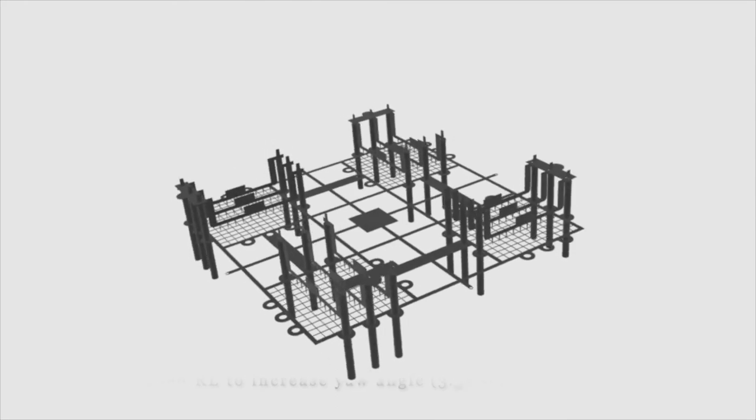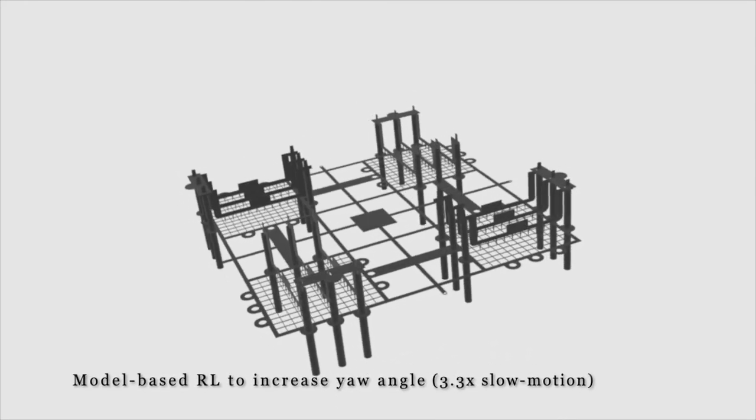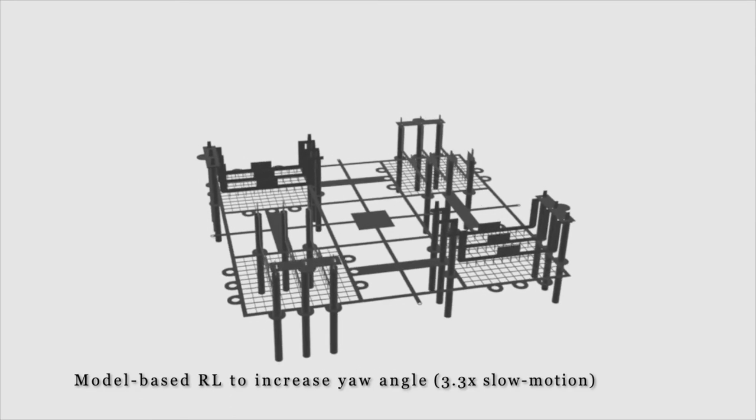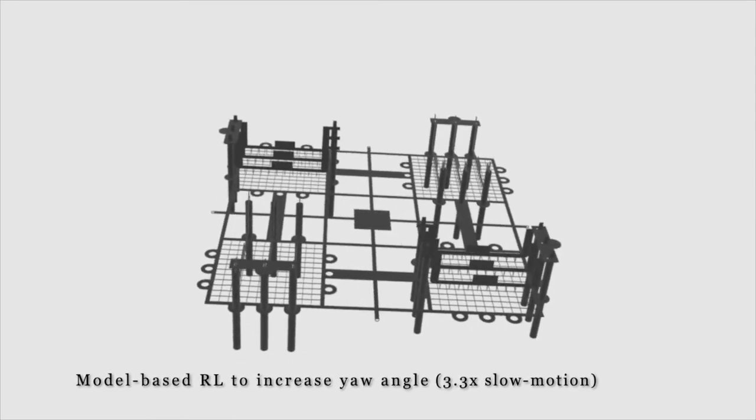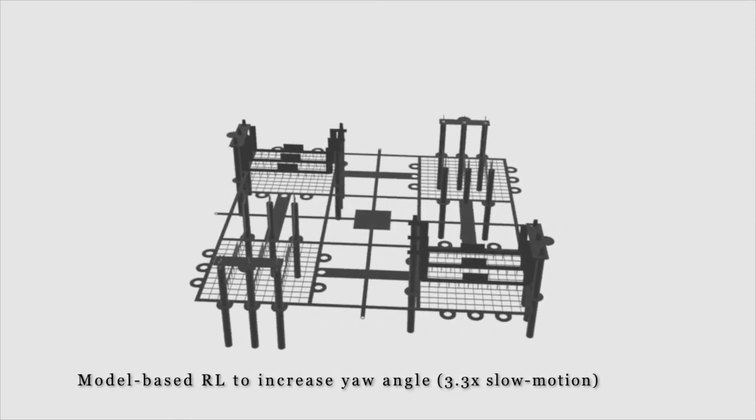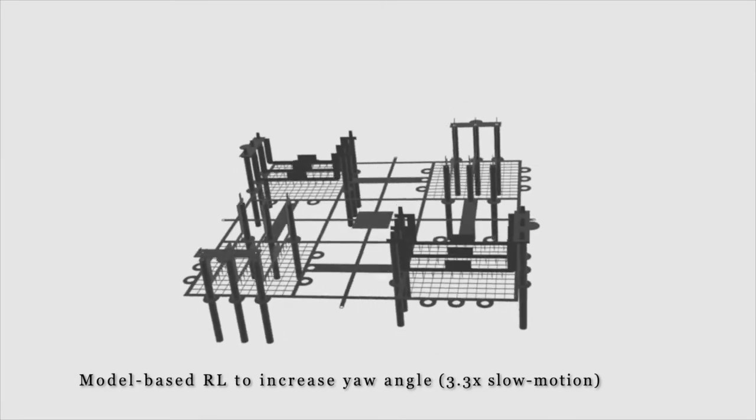This video shows the model-based reinforcement learning approach running in the simulator at 100 Hz. The jittery motion is due to the low mass of the robot and the stochastic control, but it still performs notably better than the Lee Bracket for consistent movement.